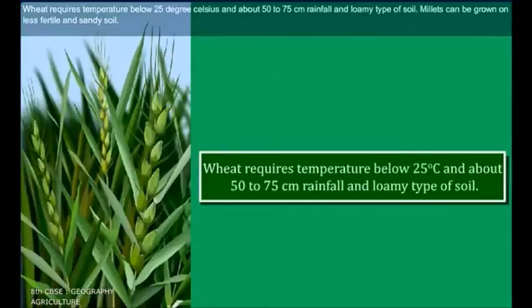Wheat requires temperature below 25 degrees Celsius and about 50 to 75 cm of rainfall, and a loamy type of soil.